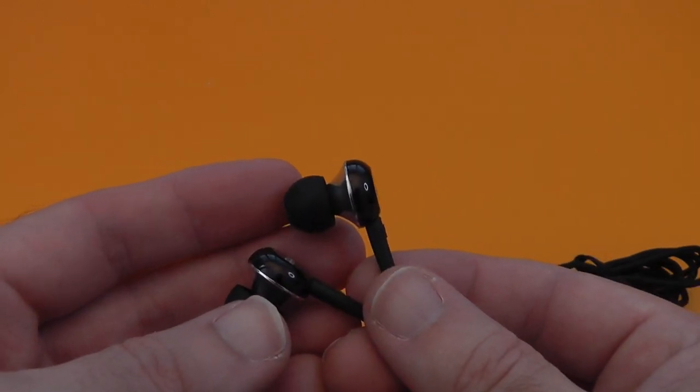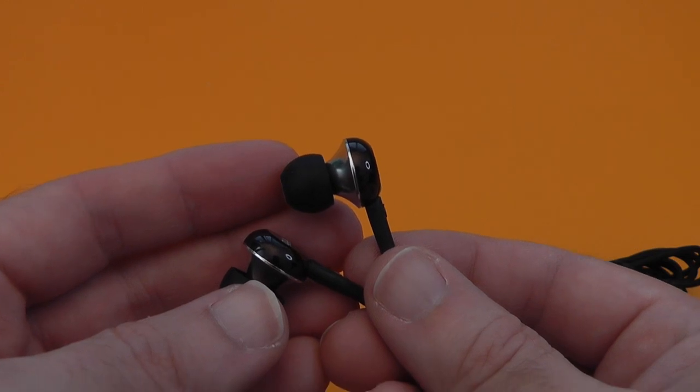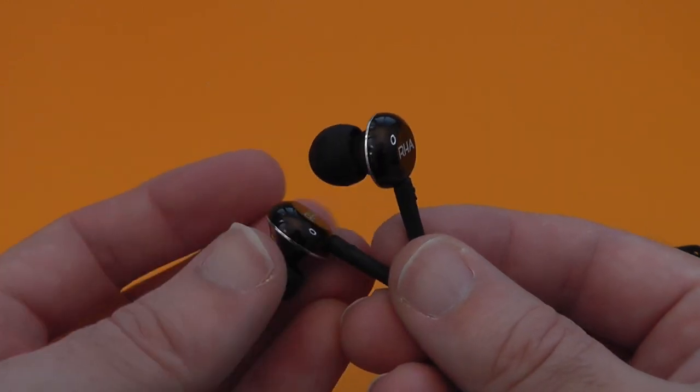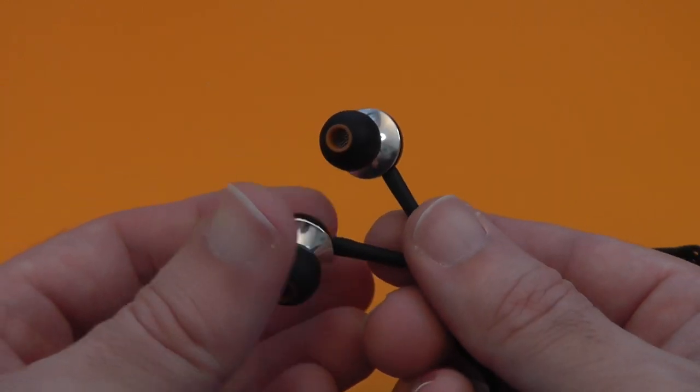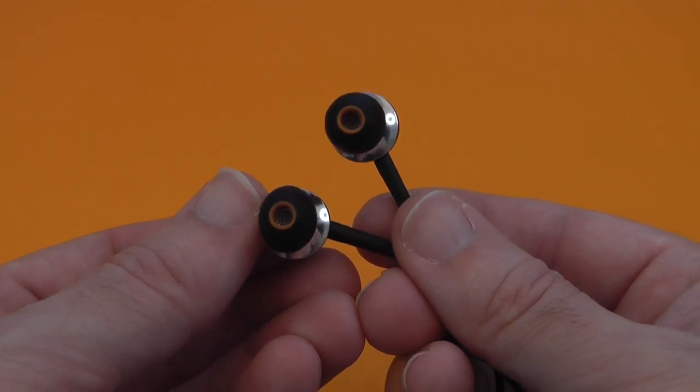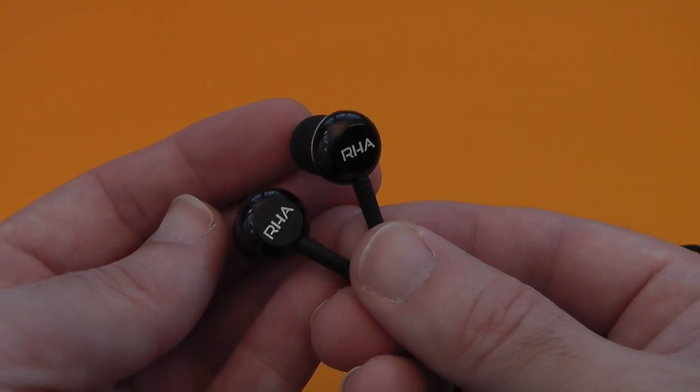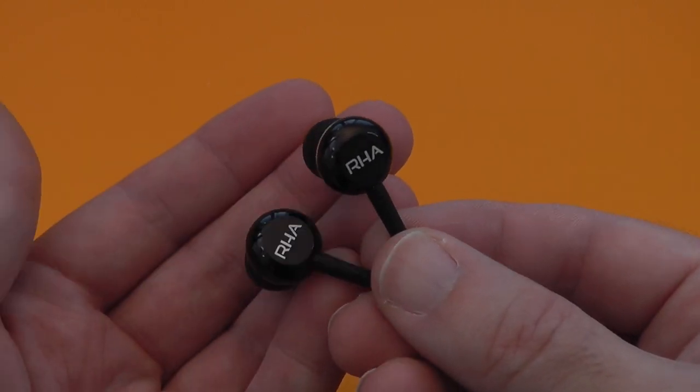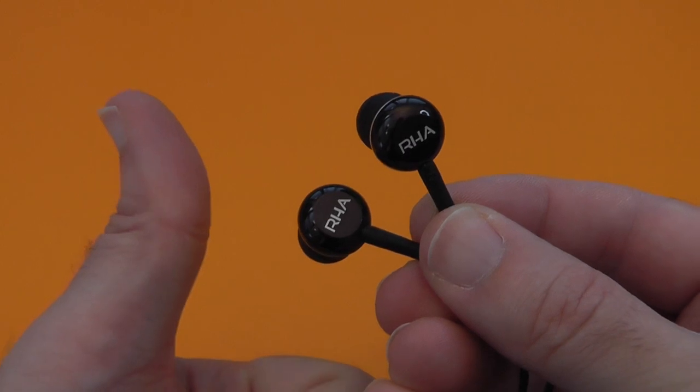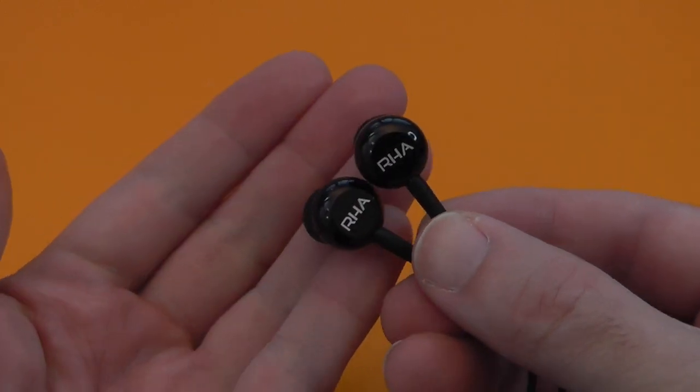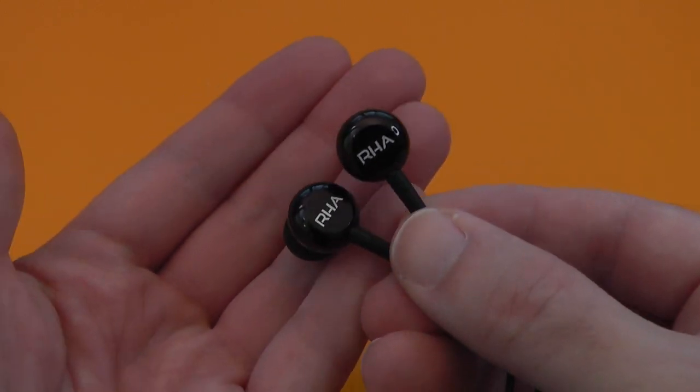Price point, absolutely superb. These are going to come in at £40 in the UK, or just under £40, and round about $50 in the US. These are the RHA MA450i in-ear earphones. Thank you very much for watching. If you've liked this video, give it a thumbs up. Please do subscribe and I will see you all in the next one.